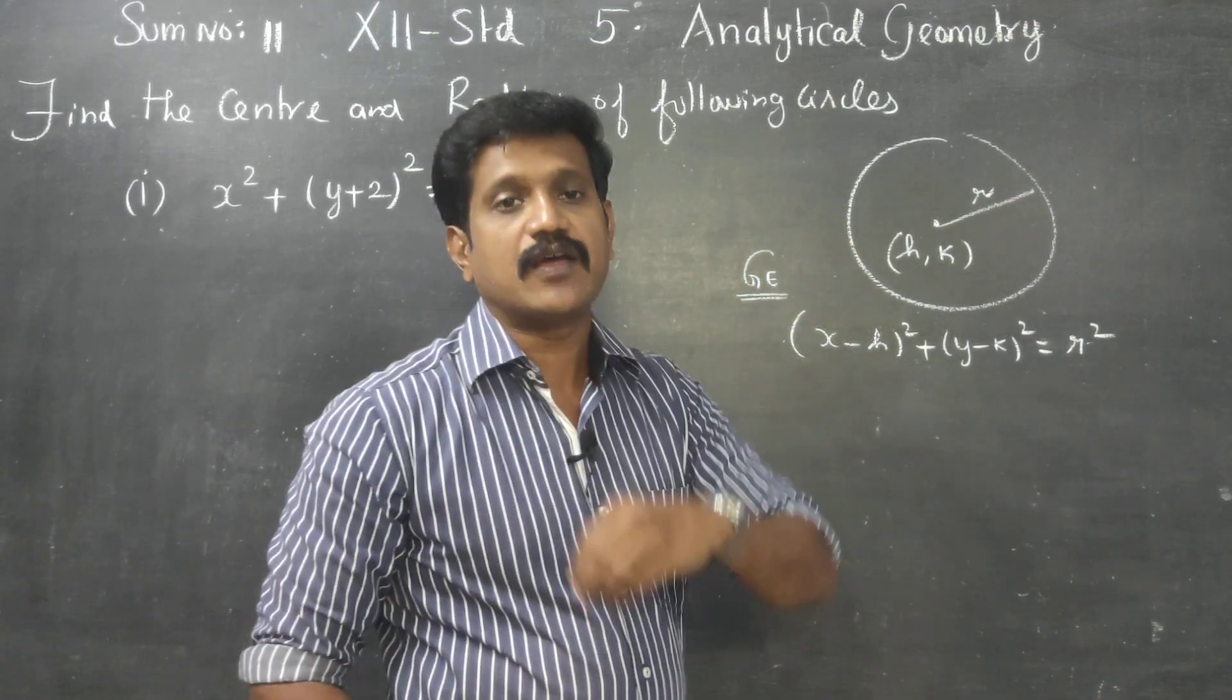The first sum resembles very well with the first format. The equation can be rewritten as (x-0)² + (y+2)² = 0.